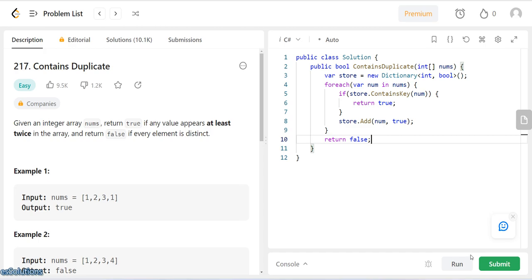So if we run this, we can see it passed and if we submit there shouldn't be any problem.